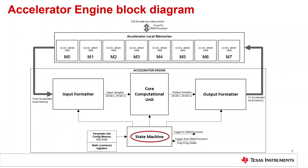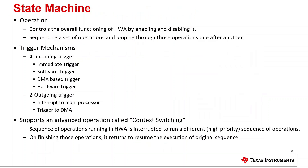Let's look at the function of the state machine block in more detail. It controls the overall function of Hardware Accelerator by enabling and disabling it, and can sequence a set of operations by looping over them. There are four incoming triggers: immediate trigger, wait for software trigger, DMA-based trigger, and wait for hardware trigger. There are two outgoing triggers: interrupt to main processor and trigger to DMA. Furthermore, it supports context switching, which enables Hardware Accelerator to perform high priority tasks while pausing the current sequence of operations.